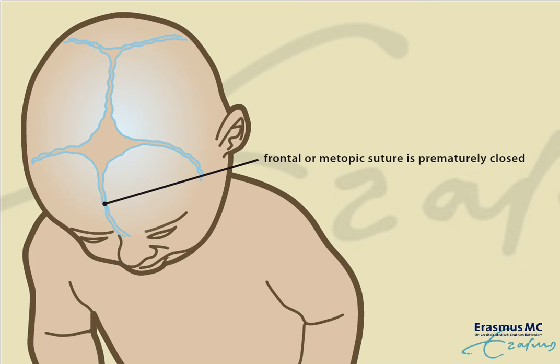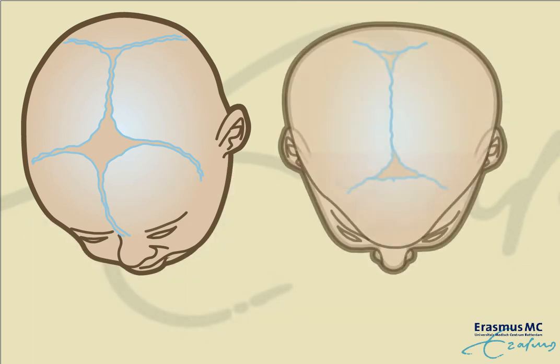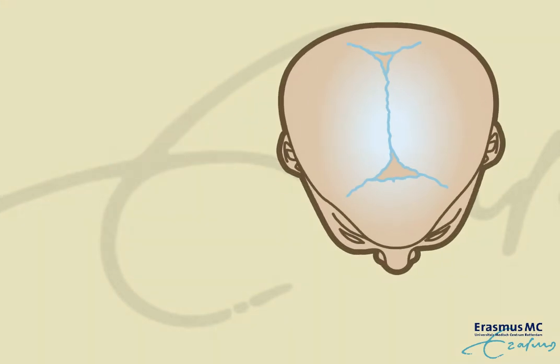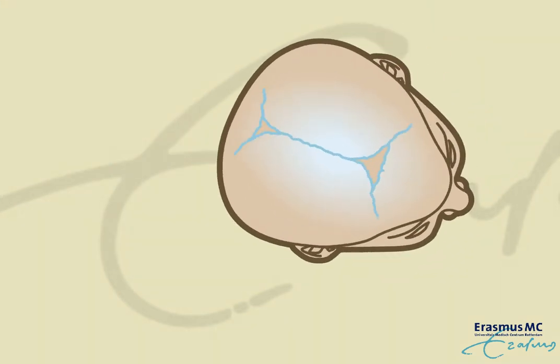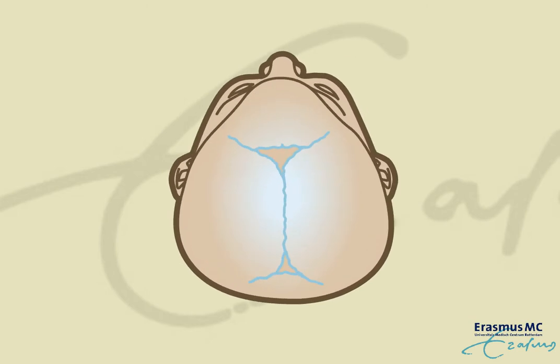When the frontal or metopic suture is prematurely closed, no growth can occur in between the two bones of the forehead. As a result, the forehead becomes wedge-shaped and narrow, with the eyes set closely together.